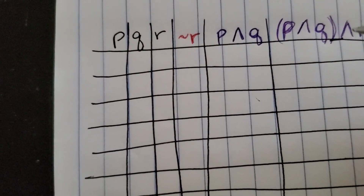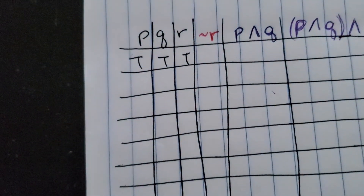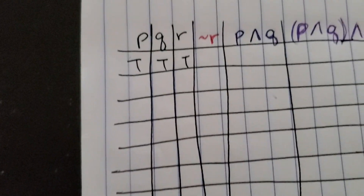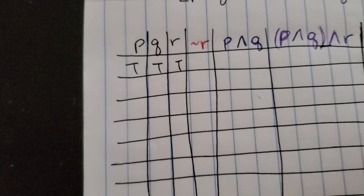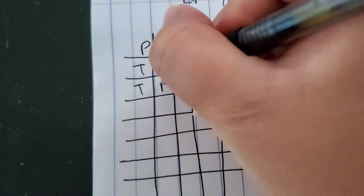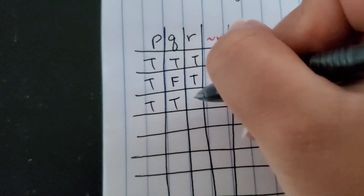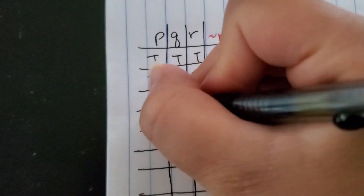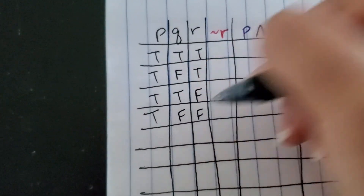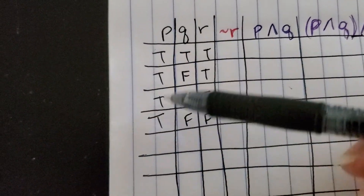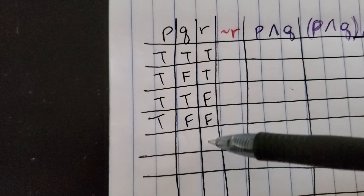We're going to do all the combinations first. We have that they can all be true. This part is just a standard table for P, Q, R, which can also be found in your book. We can have true, false, true — we can swap them — so true, true, false. And we can have true, false, false. Those are all the possibilities where P is true.